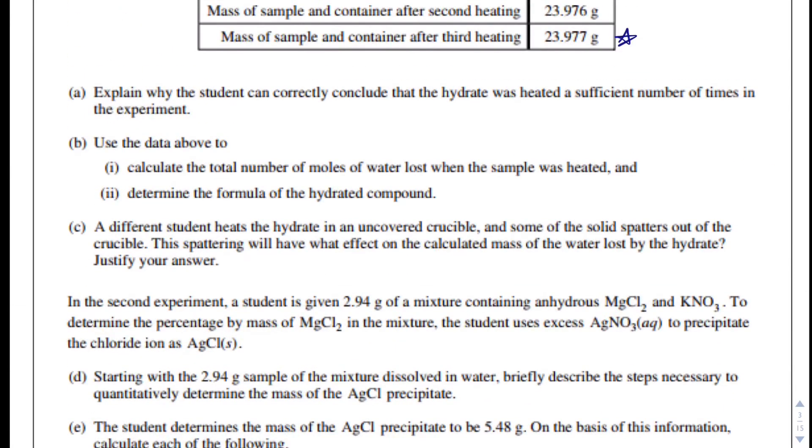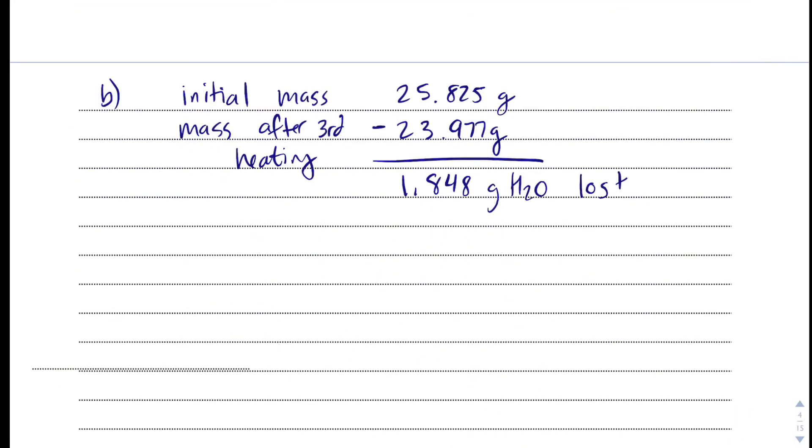That is what evaporated, and they wanted us to get moles of water, so at this point in your chemistry career, you should know the molar mass of water. It's not a big deal. There's 18.02 grams of H2O for every 1 mole of H2O, and when we do that, we're going to get 0.1026 moles of H2O lost.